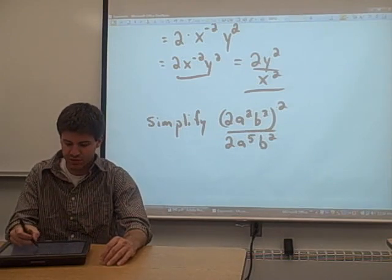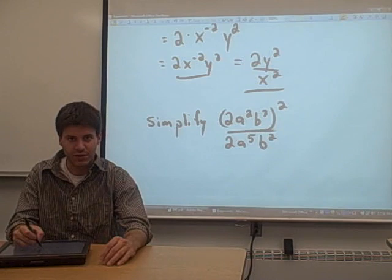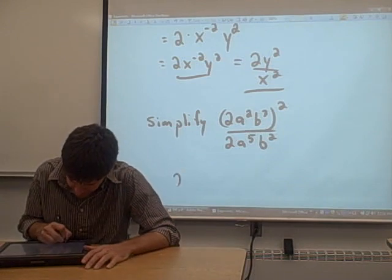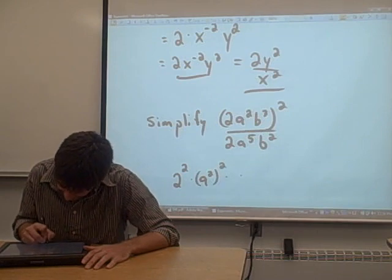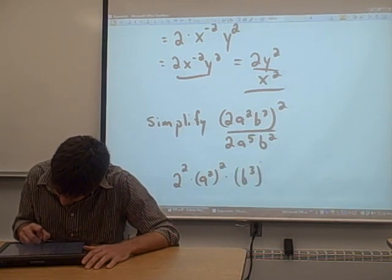So what we can do is split up the numerator and square each one of these three parts. That gives us 2 squared times a squared squared times b cubed squared.